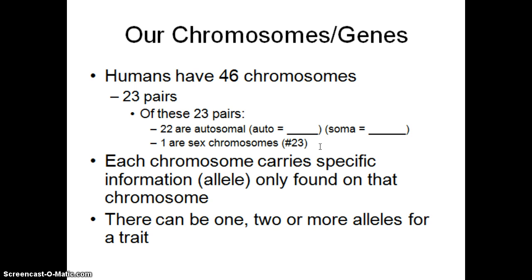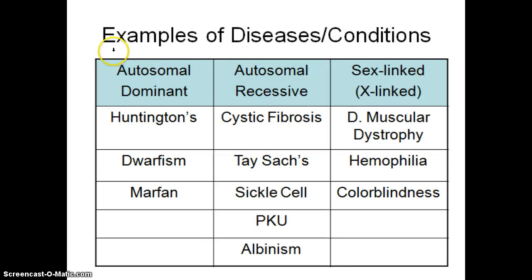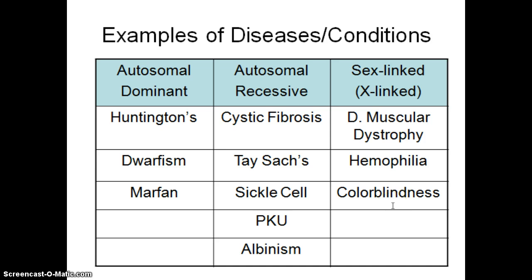Each chromosome carries specific information of an allele, and there can be one or more alleles for a particular trait. Examples of autosomal dominant and autosomal recessive — this is what we're going to focus on today, since we've already done sex-linked traits. We've not only talked about sex-linked traits, but we've done Punnett squares to figure out how things are inherited. We spent a lot of time on colorblindness, hemophilia, and Duchenne's muscular dystrophy — traits located on the X chromosome.